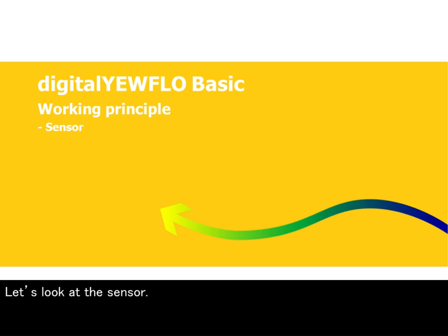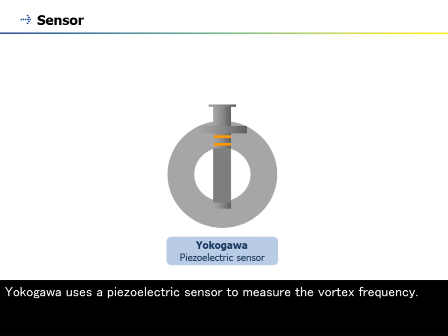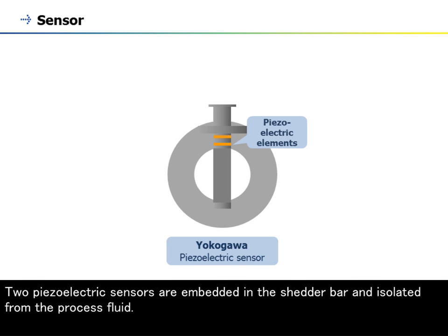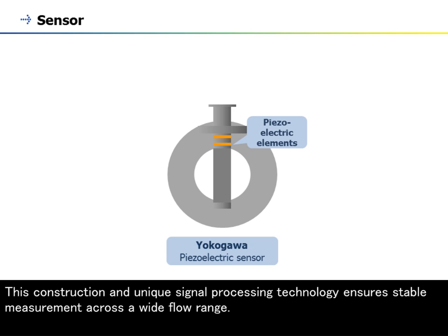Let's look at the sensor. Yokogawa uses a piezoelectric sensor to measure the vortex frequency. Two piezoelectric sensors are embedded in the shedder bar and isolated from the process fluid. This construction and unique signal processing technology ensures stable measurement across a wide flow range.